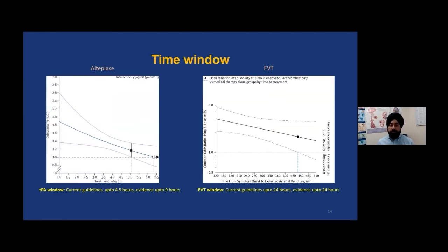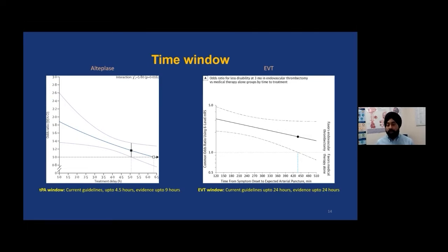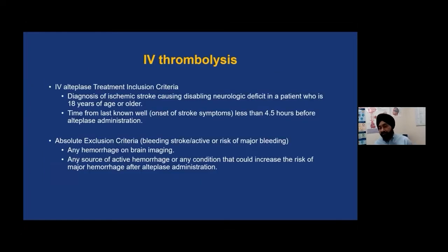As far as time windows are concerned, alteplase or intravenous thrombolysis had a window up to four and a half hours. Based on recent evidence, two major trials showed it can be safely given and is probably beneficial up to nine hours, though this is not yet standard of care. For endovascular thrombectomy, early evidence suggested benefit only up to six to seven hours, but the DAWN and DEFUSE-3 trials show evidence that therapy works up to 24 hours. Currently, TPA is still limited to four and a half hours, while EVT can treat patients up to 24 hours, with additional special imaging needed for patient selection at longer time windows.